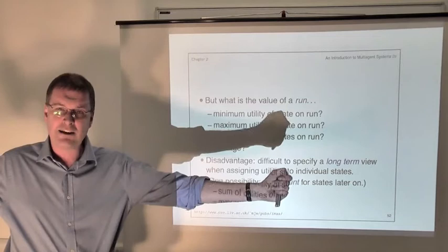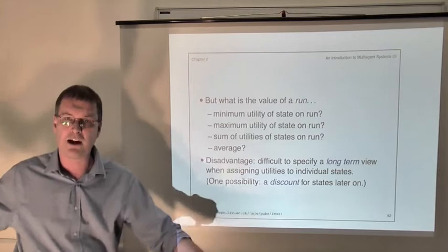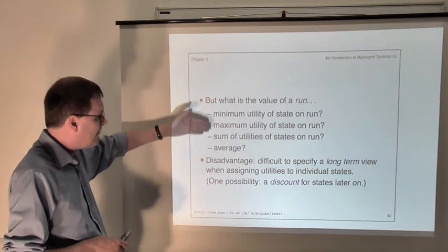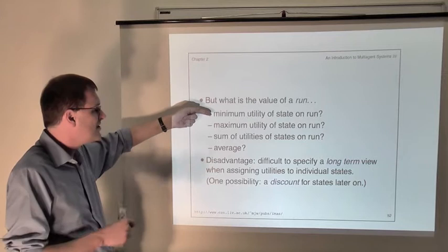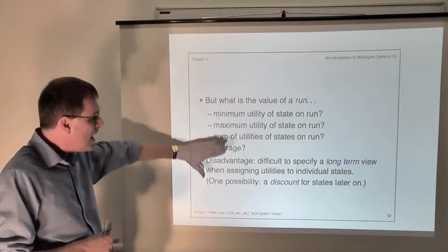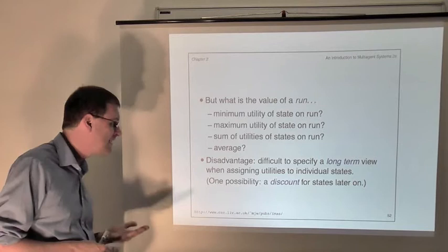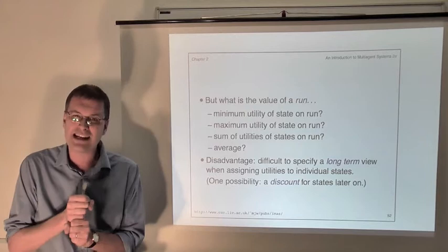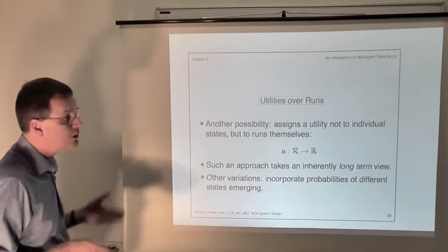So how do you lift these values of environment states to values of overall runs? That is, if you know the values of individual environment states that occur in a run, how do you then compute the value of the run itself? Different settings might answer this differently — for example, maybe what you're interested in is the value of the smallest valued environment state, or the largest, or the sum, or the average. Sometimes there will simply be no way of doing it at all. So inherently there is a difficulty with these utility functions in that we're assigning values to individual environment states, not to runs.